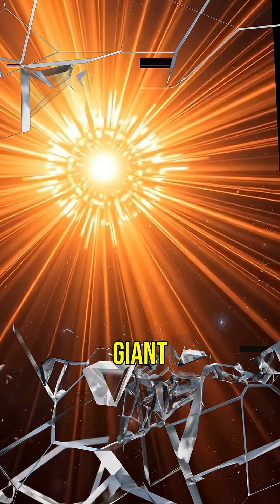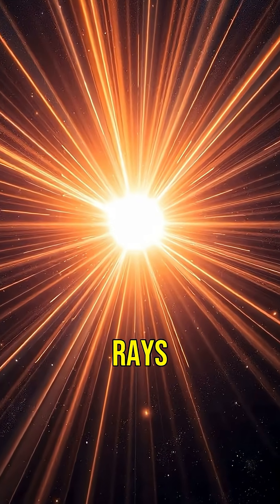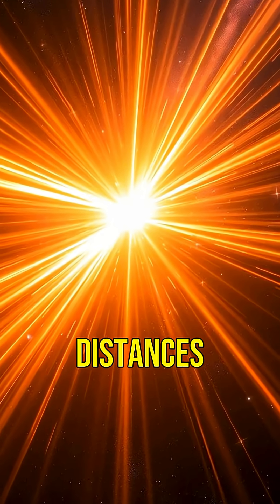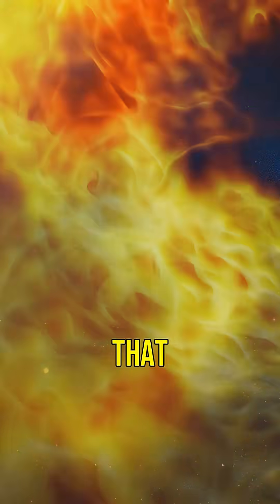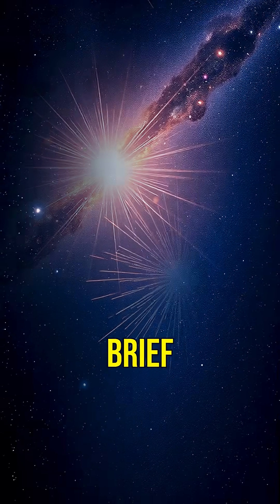Occasionally, magnetars release giant bursts of X-rays and gamma rays, which can be detected across vast distances in space. These bursts are so powerful that they can outshine the entire Milky Way for brief moments.